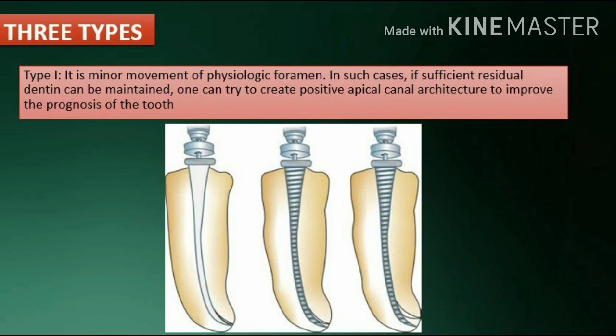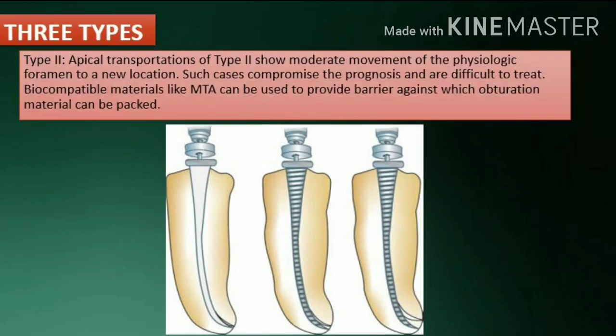Type 1: In such cases, if sufficient residual dentin can be maintained, one can try to create positive apical canal architecture to improve the prognosis of the tooth.